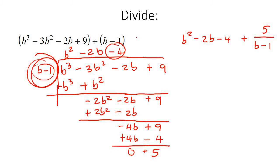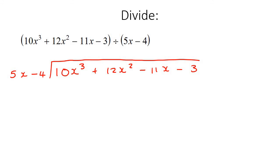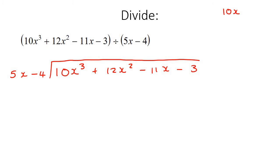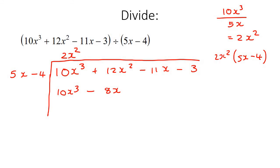We have one more example. We write it as 2x to the power of 3 plus 12x squared, take away 11x, take away 3, and then we divide that by 5x take away 4. We start with the highest power in the divisor — 5x — and the highest power here — 10x to the power of 3. We divide: 10x to the power of 3 divided by 5x gives us 2x squared. So we put 2x squared at the top. Then we take 2x squared and multiply it with 5x take away 4, giving us 10x to the power of 3 take away 8x squared.